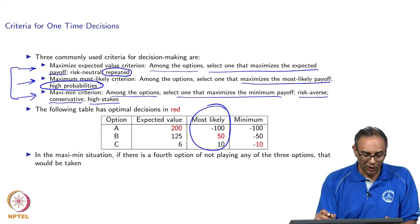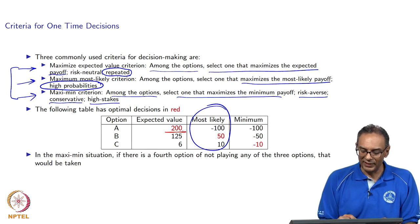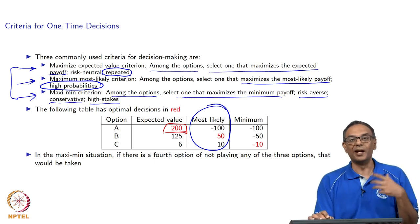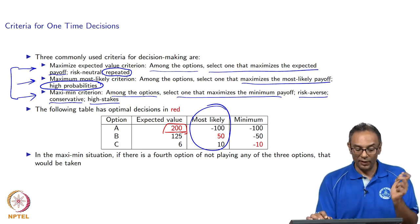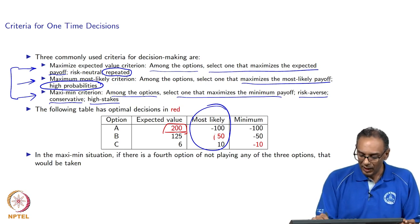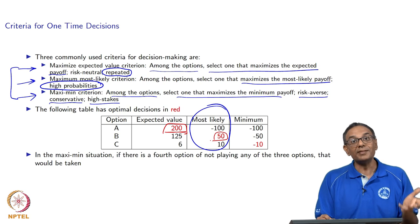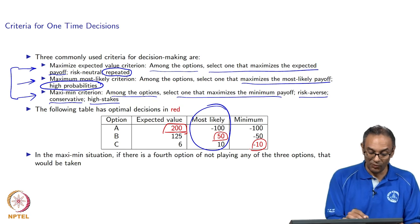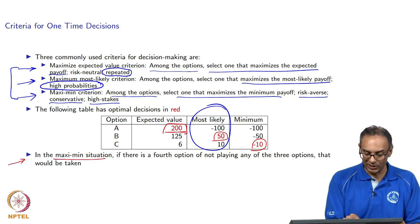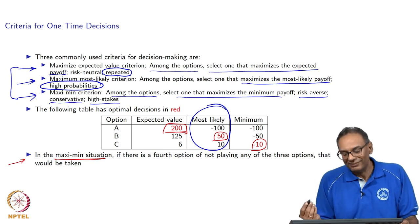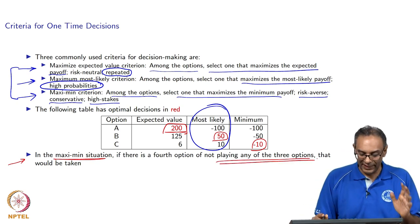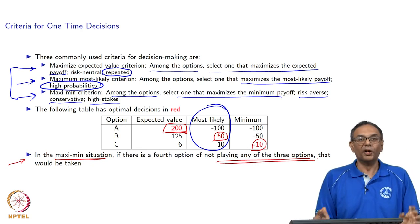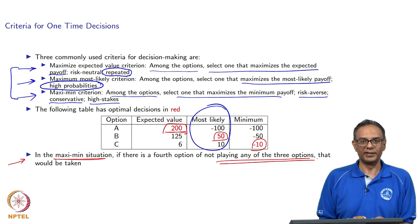To summarize: we would take the expected value decision and pick Option A if that is our criterion — either being risk-neutral or making repeated decisions. We would pick Option B to maximize the most likely outcome. We would pick Option C if being extremely conservative. In the extremely conservative maximin situation, the right thing to do might even be to not play any of the three options and invest zero. That brings us to the end of this lecture.